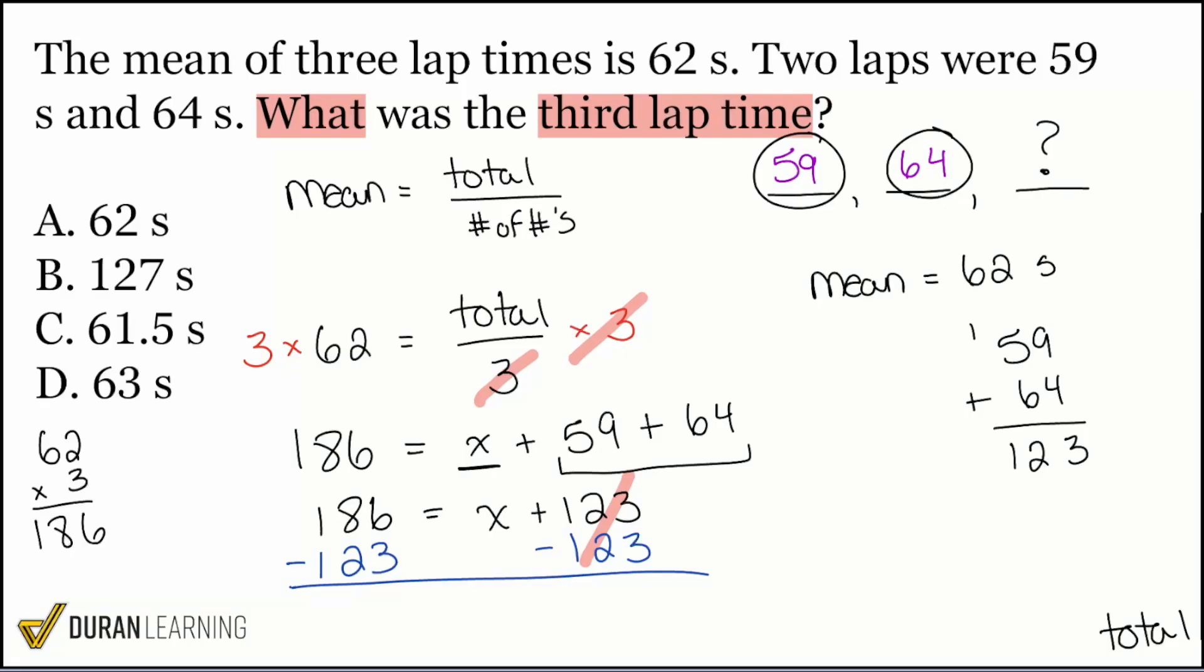And let's see what magically happens once we do this. Cancels on the right side. 186 minus 123. That leaves us a three. That's a six. And there is our missing number. 63. That's going to be answer choice D. 63 seconds. And there we are.